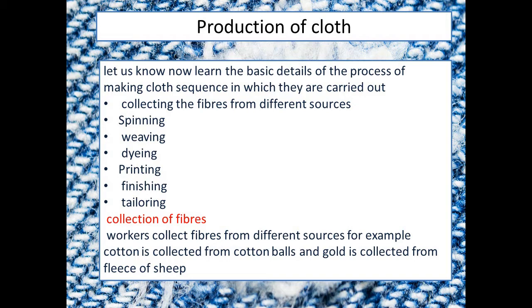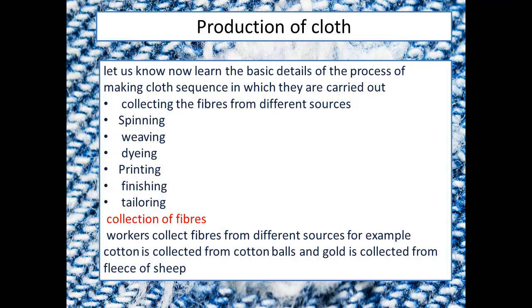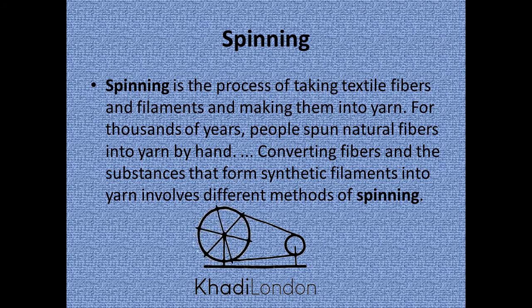Now let us learn the basic details of the process of making cloth. The steps are: first, collecting the fibers from different sources; second, spinning; third, weaving; fourth, dyeing; fifth, printing; sixth, finishing; and seventh, tailoring. Workers collect fibers from different sources — for example, cotton is collected from cotton balls and wool is collected from the fleece of a sheep. Next, the fibers are spun.